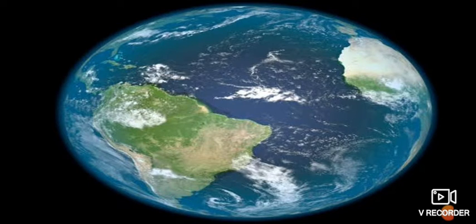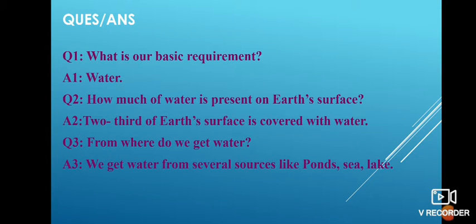Now children, you can write down these question answers in your copy. Question number one: what is our basic requirement? That is water. How much water is present on the earth's surface? Two-thirds of the earth's surface is covered with water. From where do we get water? We get water from several sources like pond, sea, lake.